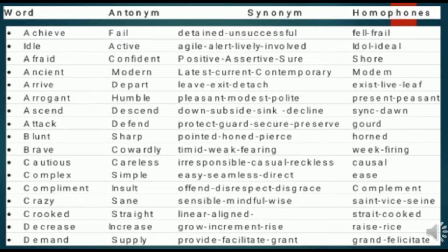You need to keep practicing. I have found the word 'achieve' — something that you have achieved. The opposite of achieve is when you have not achieved, maybe 'failed.' A similar meaning to fail is 'detained' or 'unsuccessful.' And a word that sounds similar — a homophone — is 'frail' or 'fell.' That's how you collect four words out of one word: achieve, fail, unsuccessful, and frail.